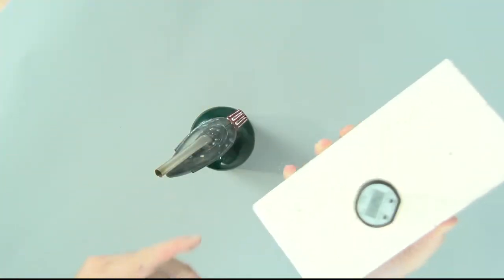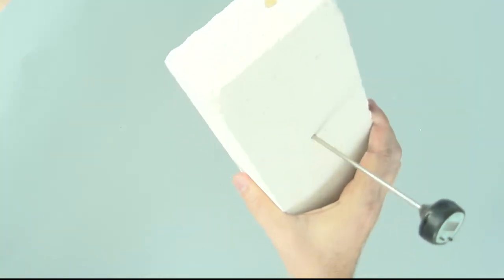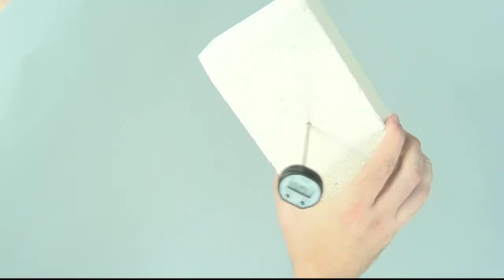Insert the thermometer on the side of the brick that will not be heated. Be sure not to push the thermometer all the way through the brick, as this will produce the same result as putting the thermometer on the heated side.